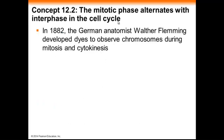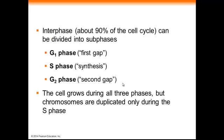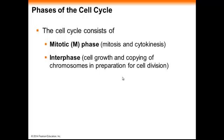In the cell cycle, there are two distinct sets of events: the mitotic phase and interphase. The German anatomist Walter Fleming is credited with figuring this out initially, using different dyes that stained chromosomes so he could see them. The cell cycle consists of the mitotic phase — which is mitosis and cytokinesis — and interphase, during which cell growth and copying of the chromosomes occurs in preparation for the mitotic phase.